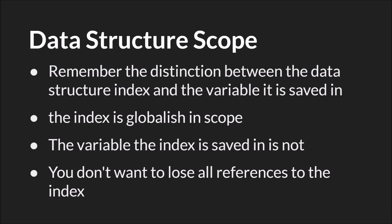The next thing to talk about is data structure scope. You need to remember the distinction between the data structure's index and the variable it is saved in. The index is global-ish in scope — it's really just an integer, like zero, one, or five. Any function that references the data structure using that index can access it if it exists. So multiple instances can reference the same data structure if they know the index. However, the variable the index is saved in functions just like any other variable in GameMaker Studio 2. If it is a global variable it's global; if it's an instance variable it gets destroyed when that instance is destroyed; and if it's a local variable it'll be gone at the end of the event or script that created it.